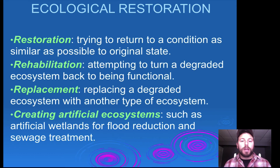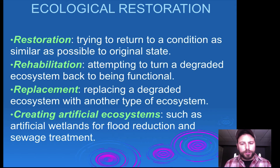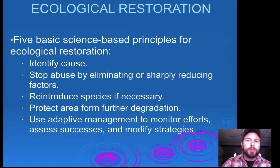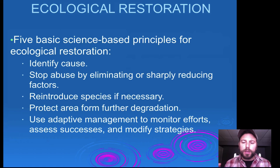What we can do through ecological restoration: restoration, rehabilitation, replacement, and creating artificial ecosystems are ways to build up and maintain our natural areas and biodiversity. There are five basic science-based principles for ecological restoration: identify a cause, stop the abuse of that area, reintroduce species if necessary (such as wolves), protect the area from further degradation, and use adaptive management to monitor efforts and assess success — so we can figure out ways to modify our approach if it isn't working.